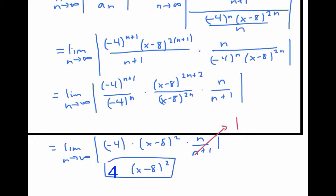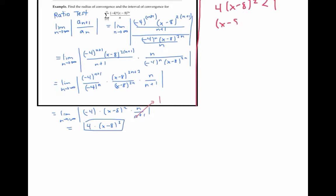The ratio test says the series will converge where this limit is less than one. So we set four times x minus eight squared to be less than one and solve for x. In other words, x minus eight squared is less than one fourth.